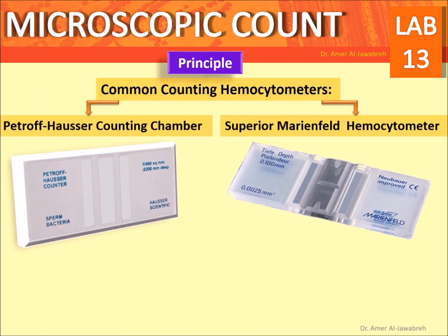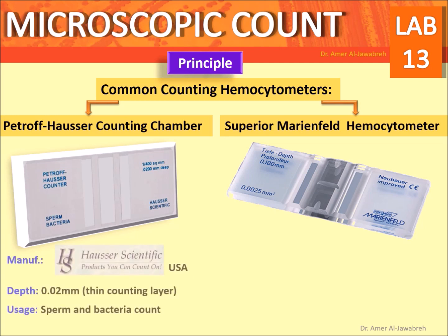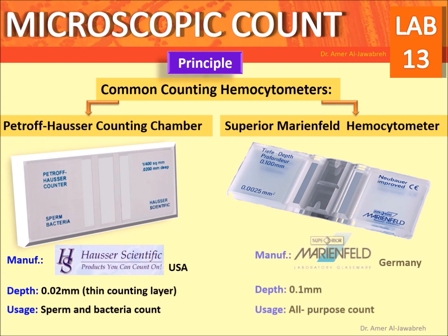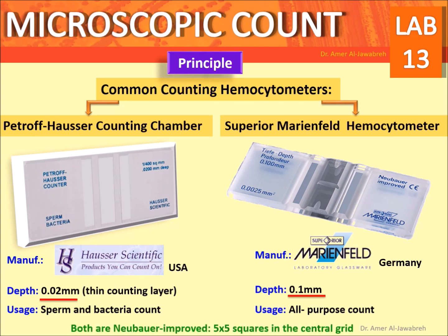Common counting hemocytometers include the Petroff-Hauser counting chamber and the Superior Marine Field hemocytometer. The Petroff-Hauser is manufactured by Hauser Scientific, USA, and has a depth of 0.02 mm — a thin counting layer used for sperm and bacterial counts. The Marine Field hemocytometer is manufactured in Germany, has a depth of 0.1 mm, and is used for all-purpose counting. Both are Neubauer improved designs.